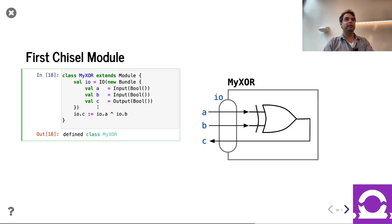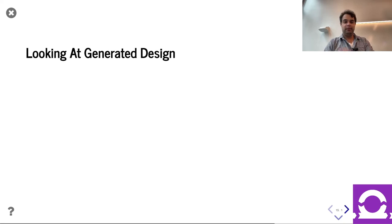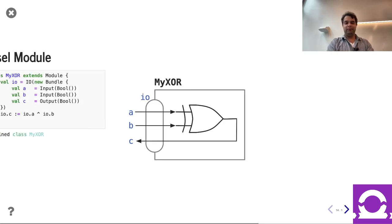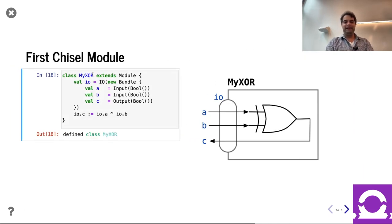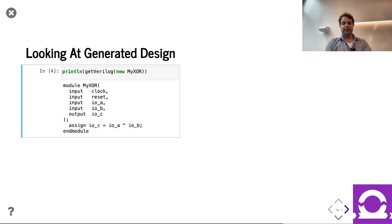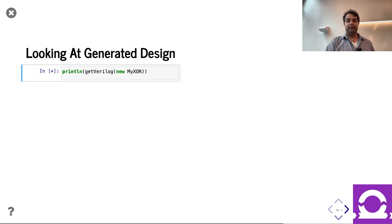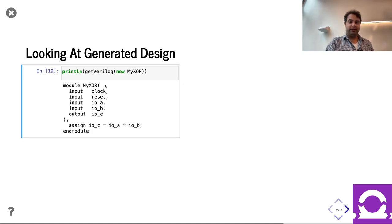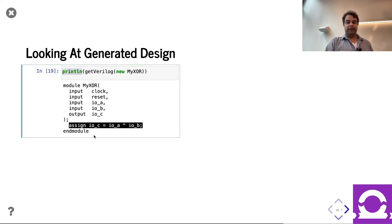Now that we have a design declared, what can we do with it? We can print it as Verilog. In the Jupyter environment for this class, there's a `getVerilog` command — give it a module and it returns the Verilog. And here's what you'd expect: module declaration, assign statement, endmodule, with input and output ports. It all makes sense.